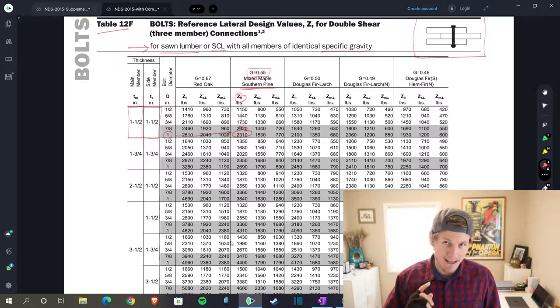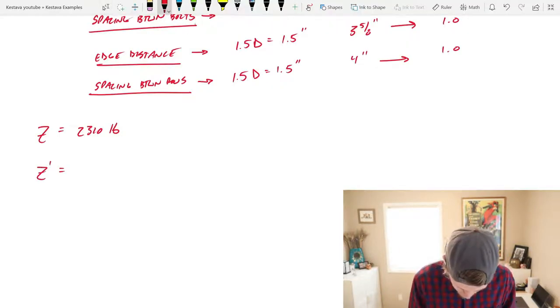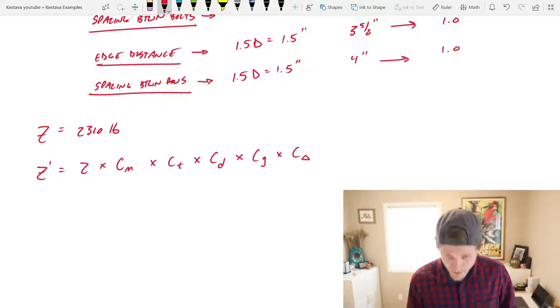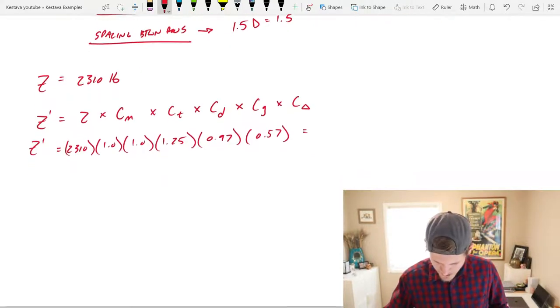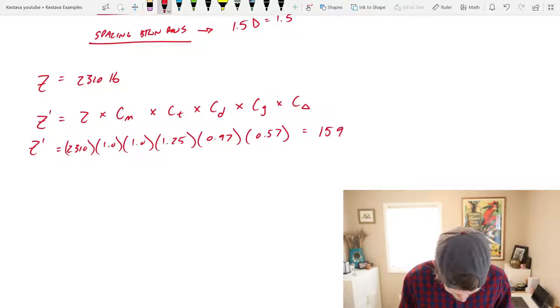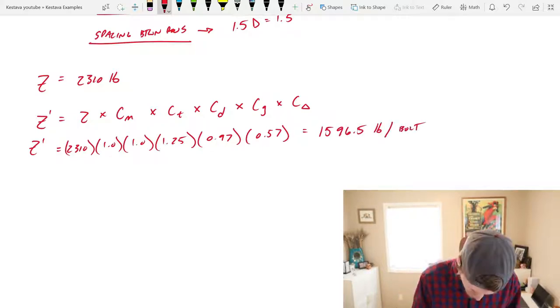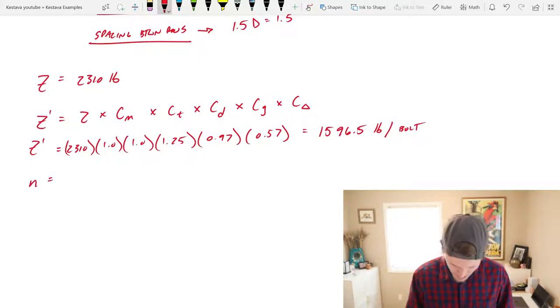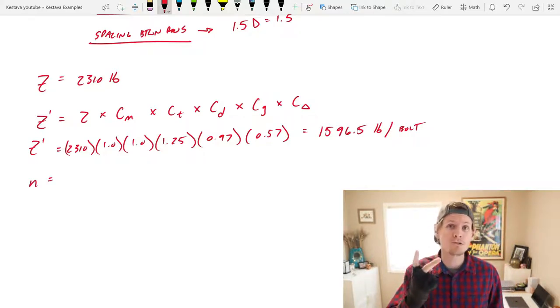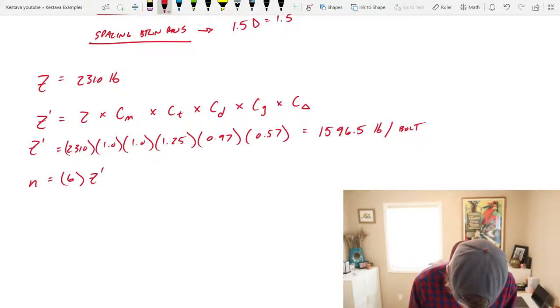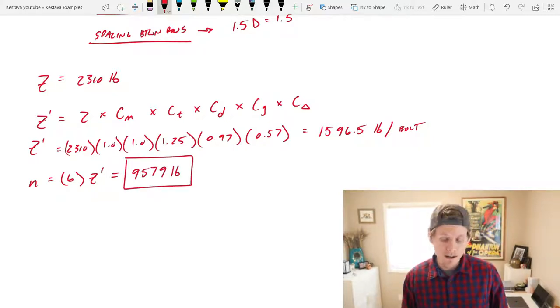Next we need to find z prime, which is your z times all of your C factors. All of that breaks down to the following—that spits out 1596.5 pounds per bolt. Now n is your number of bolts, and we have six of them per connection: two rows of three bolts times z prime gets us a total capacity of 9579 pounds.